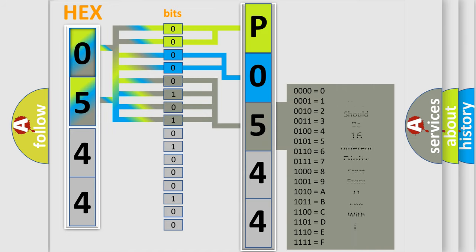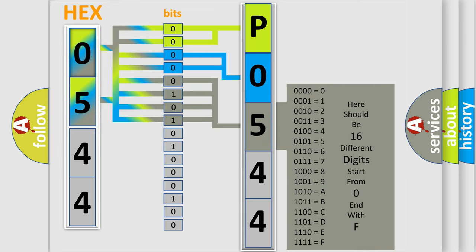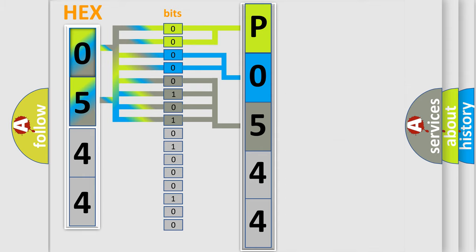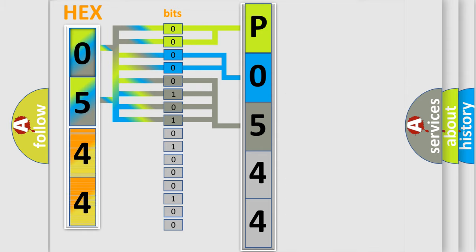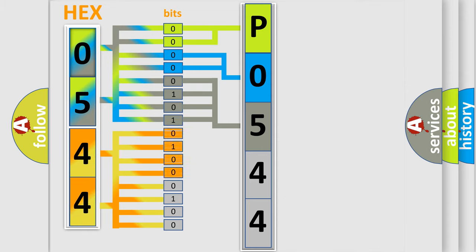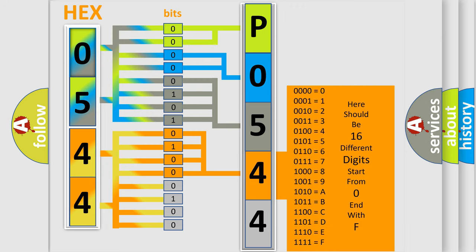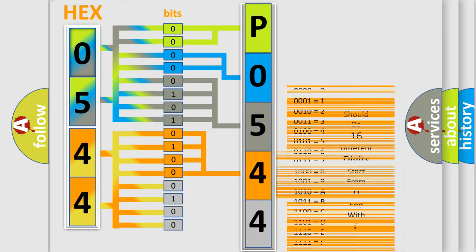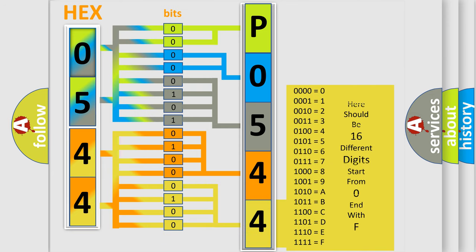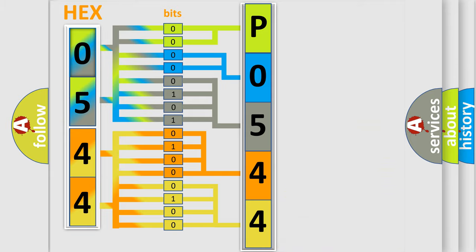The second byte is composed of a combination of eight bits. The first four bits determine the fourth character of the code, and the combination of the last four bits defines the fifth character. A single byte conceals 256 possible combinations. We now know in what way the diagnostic tool translates the received information into a more comprehensible format.